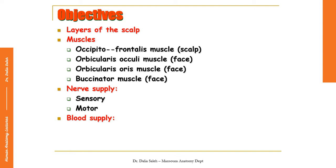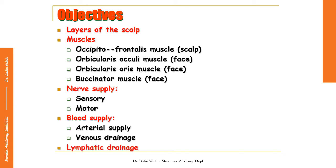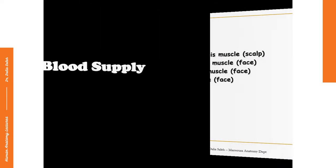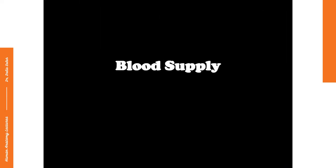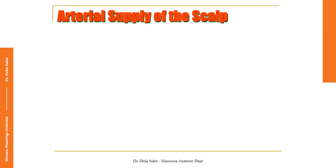In this presentation I will cover the blood supply of the scalp and face, including their arterial supply, the venous drainage, and also their lymphatic drainage. The arterial supply of the scalp will be via five arteries: three in front of the auricle and two behind it.